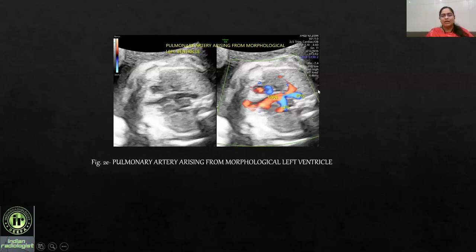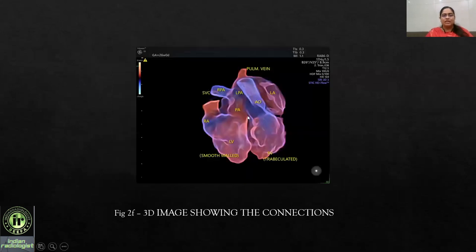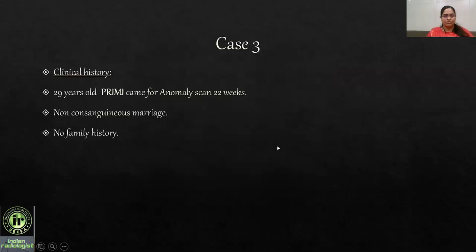The main pulmonary artery was seen arising from the left ventricle and giving its branches, with normal caliber. A 3D image confirmed all findings: the right atrium draining into the smooth-walled left ventricle, which was drained by the pulmonary artery; and the left atrium draining into the right ventricle, further draining into the aorta. This confirmed the diagnosis of corrected TGA.